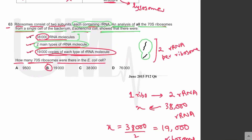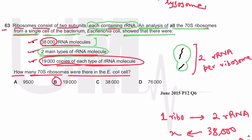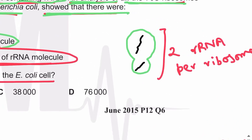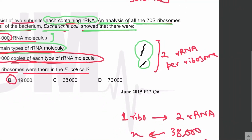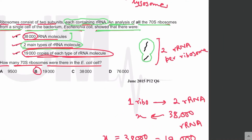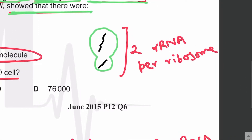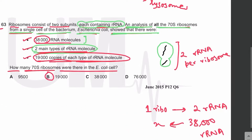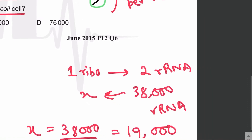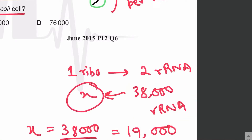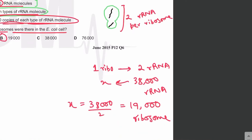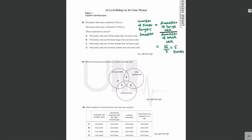To summarize MCQ 63: the ribosome has a large subunit and a small subunit, each containing one ribosomal RNA — so two ribosomal RNAs per ribosome. With 38,000 total ribosomal RNAs, there are 19,000 ribosomes in the cell. The answer is B.